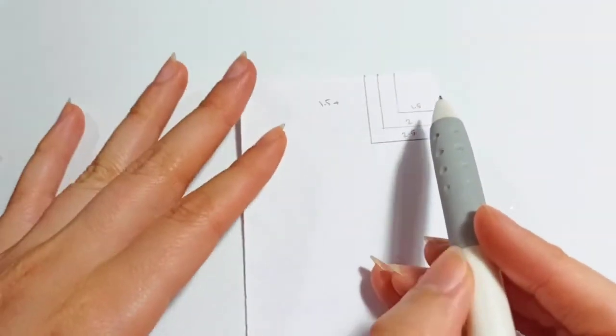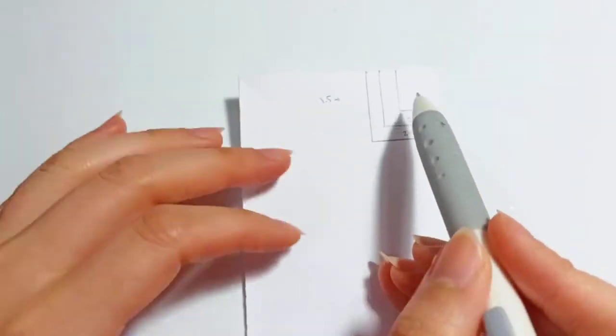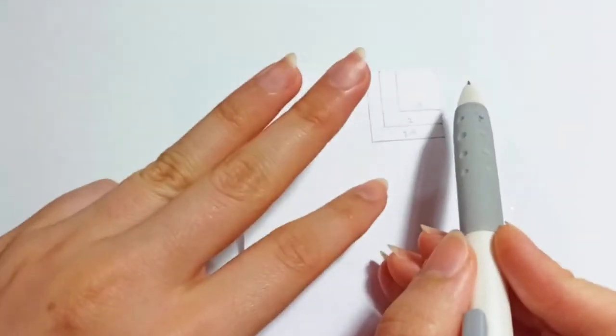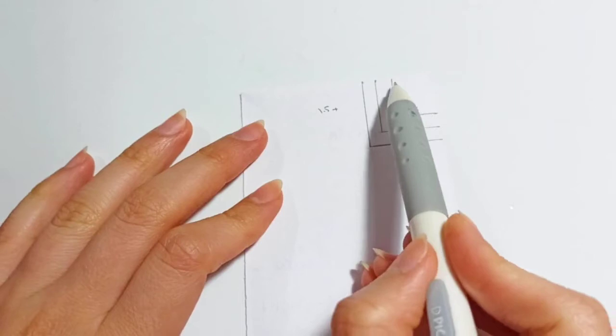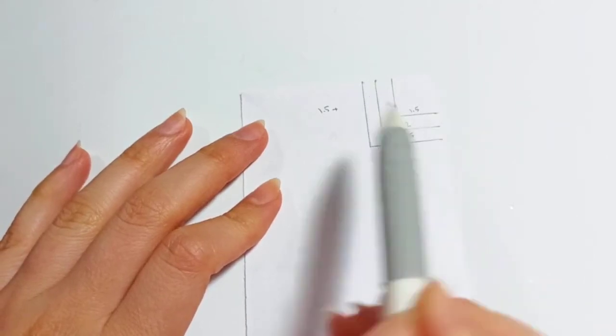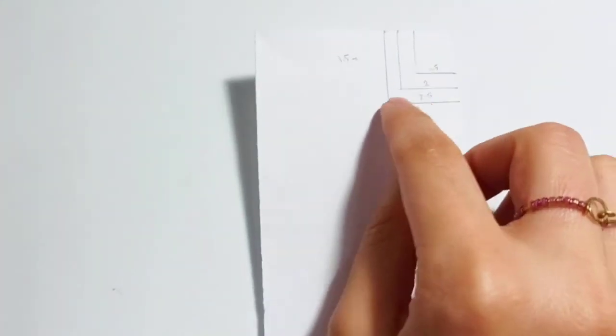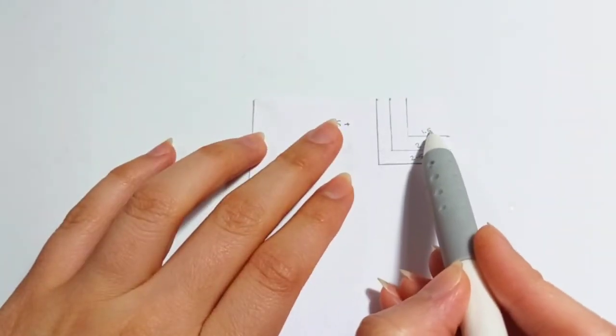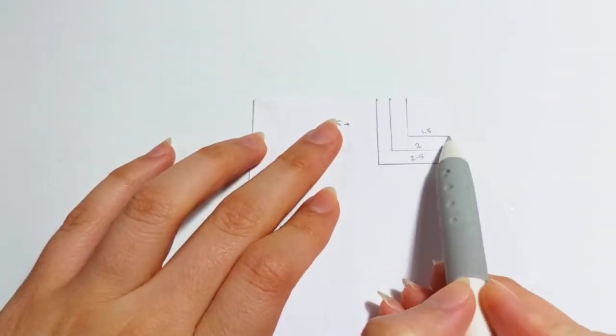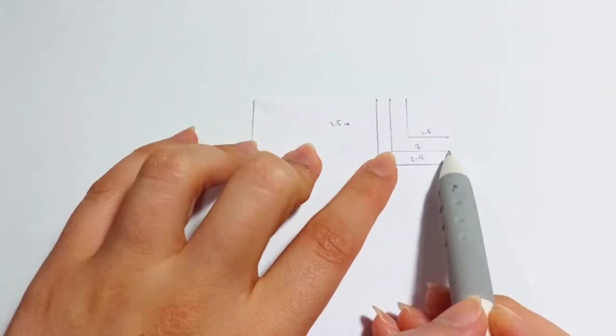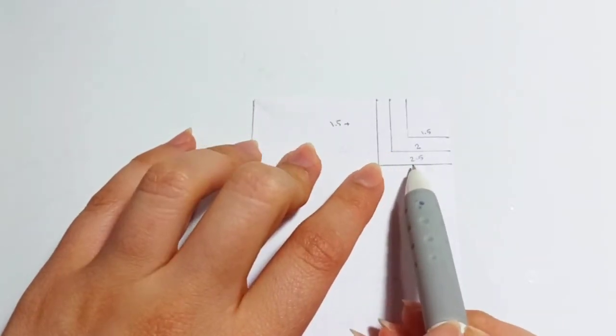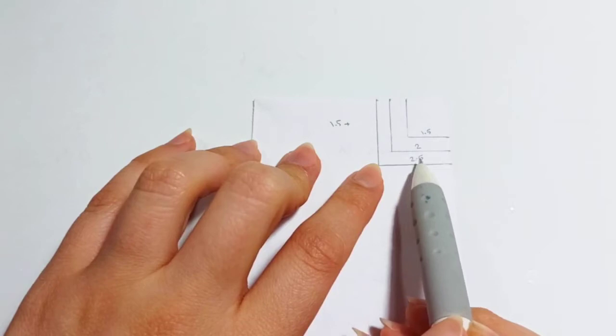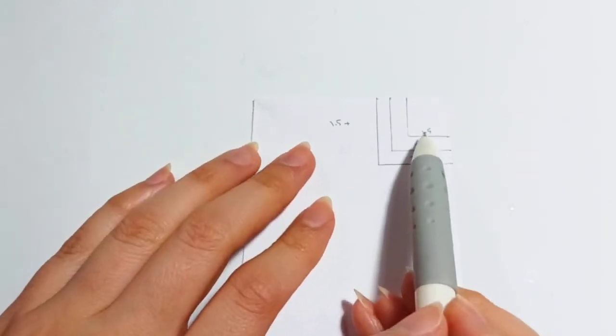We start by drawing the map and the lines that we are going to cut on our wire. We need three squares with three sizes: the first one has 1.5 centimeter sides, the second one 2 centimeters, and the third one 2.5 centimeters.